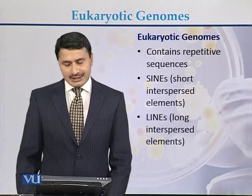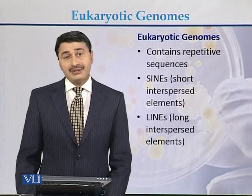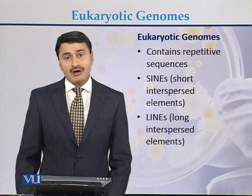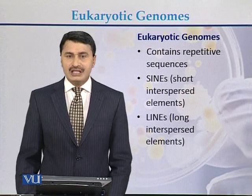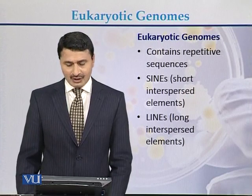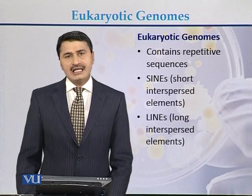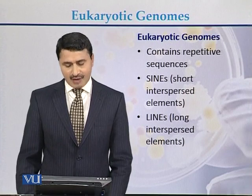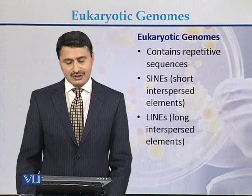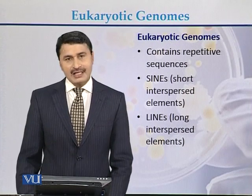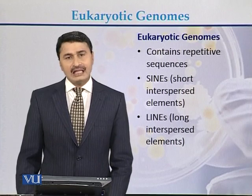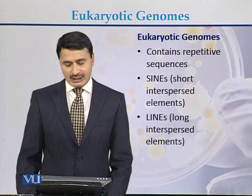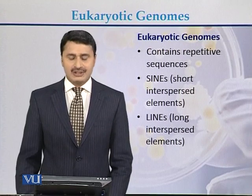Eukaryotic genomes contain repetitive sequences. Most of the DNA or genome of eukaryotes is repetitive in nature. Repetitive DNA can be in the form of SINEs, which are called short interspersed elements, and it can be in the form of LINEs, which are called long interspersed sequences.